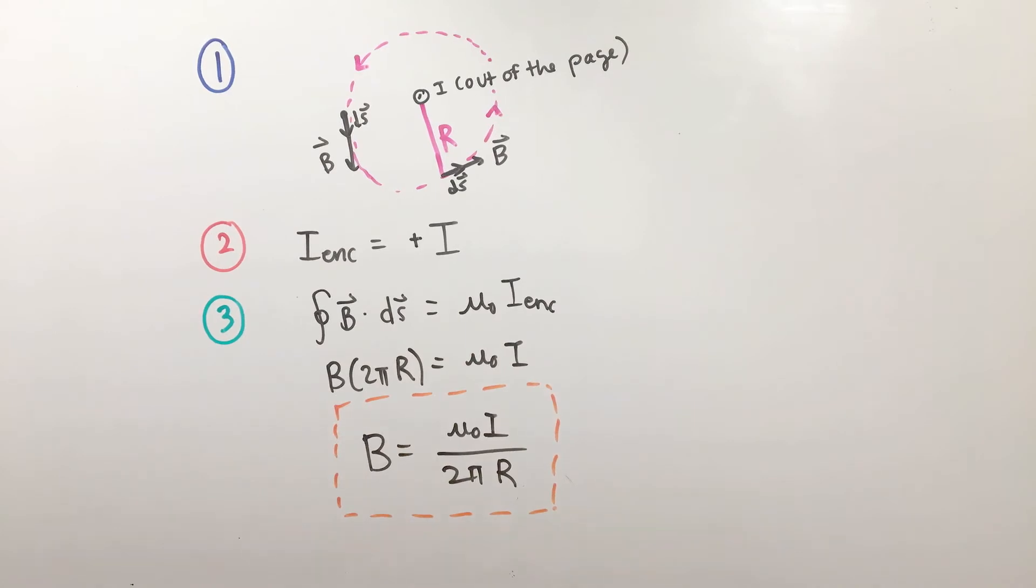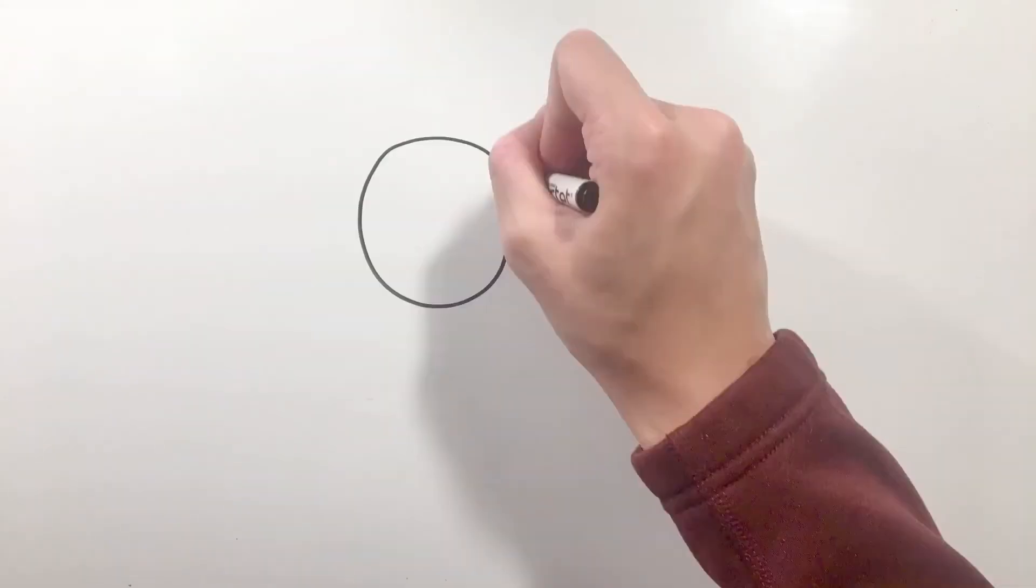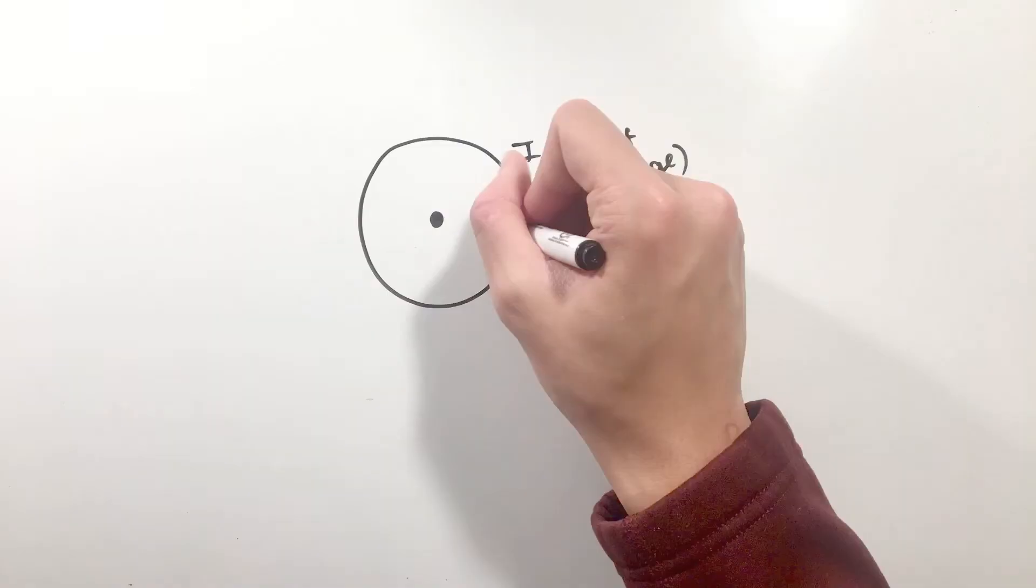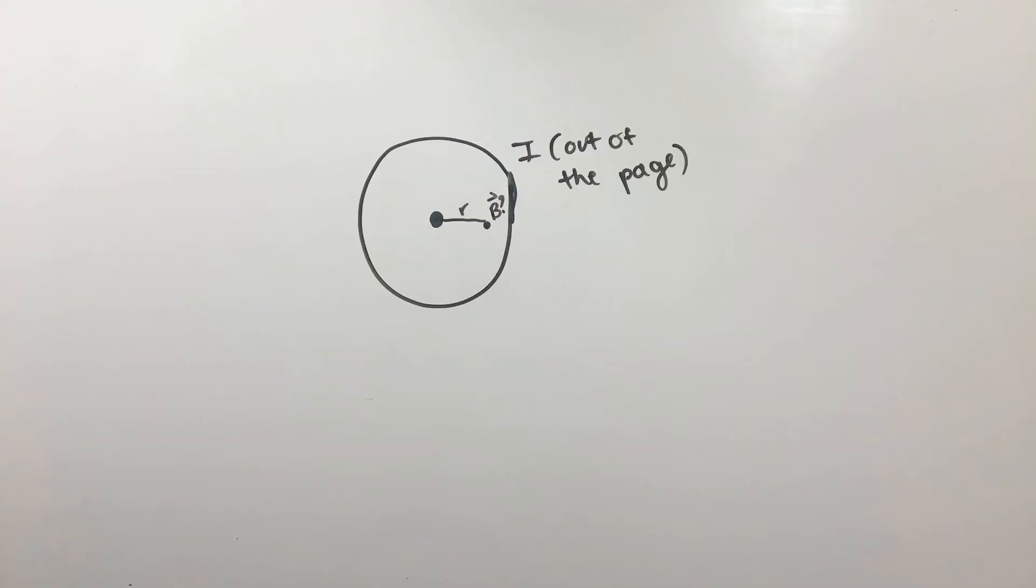For our next common scenario, let's find the magnetic field associated with this same exact current-carrying wire, but the magnetic field inside of the wire itself.